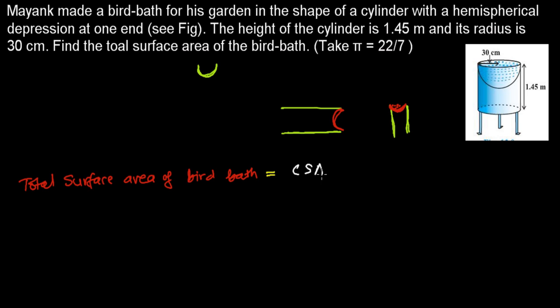So the total surface area of this bird bath will be the sum of the curved surface area of hemisphere plus curved surface area of cylinder.